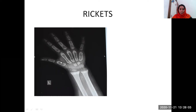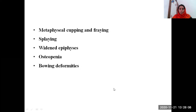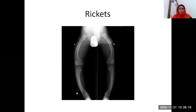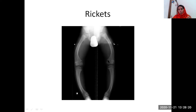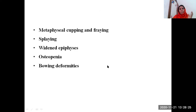Another x-ray is a lower limb x-ray which is actually showing a bowing of the legs. Again, in the metaphyseal area, there is splaying very nicely seen. There is a slight cupping and fraying also. In short, we see metaphyseal cupping, fraying, splaying, there is widened epiphysis, osteopenia, and bowing deformities seen in case of rickets. This is a very important question both in theory and in practicals.